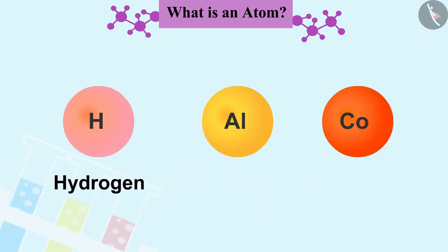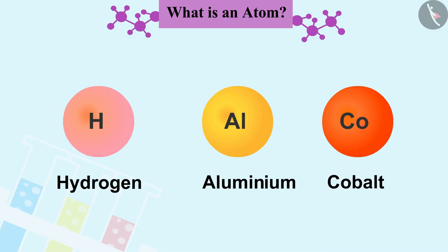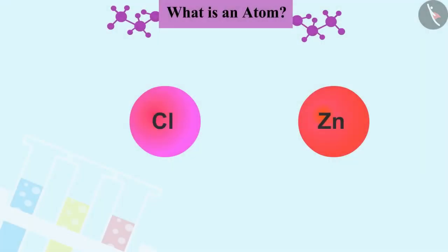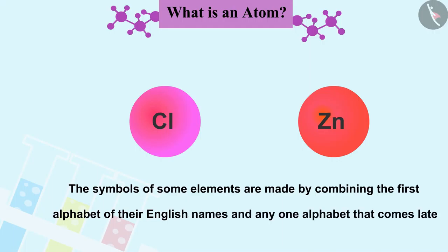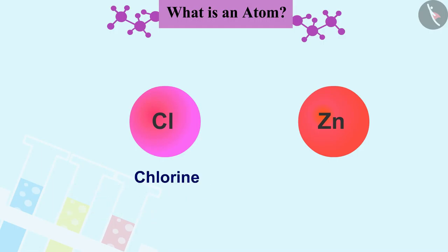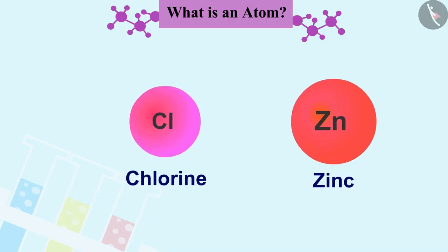For example, for hydrogen H, for aluminium Al, for cobalt Co, etc. Similarly, the symbols of some elements are made by combining the first alphabet of their English names and any one alphabet that comes later, such as for chlorine Cl, for zinc Zn, etc.